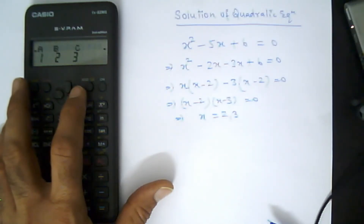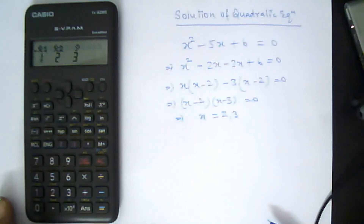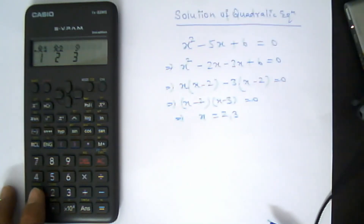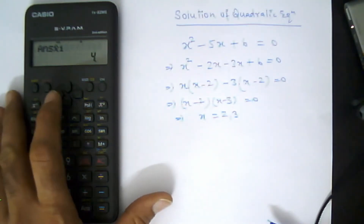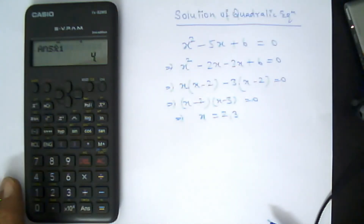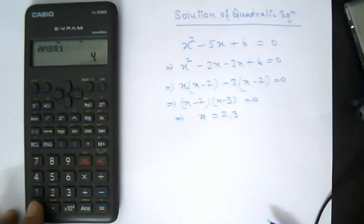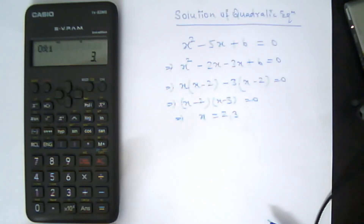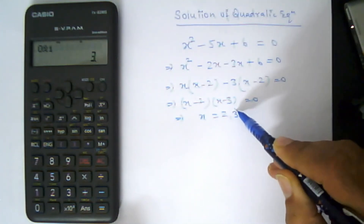Press the right arrow key 3 times. You can see x1 and x2 displayed. To select the x1 root, press 1. Now use the left arrow key to navigate to the first digit — 'a' will be blinking. Type 0 here and press equal. You get the first root, which is 3.